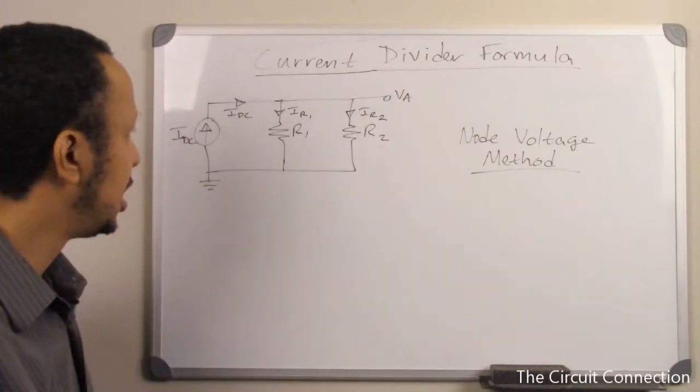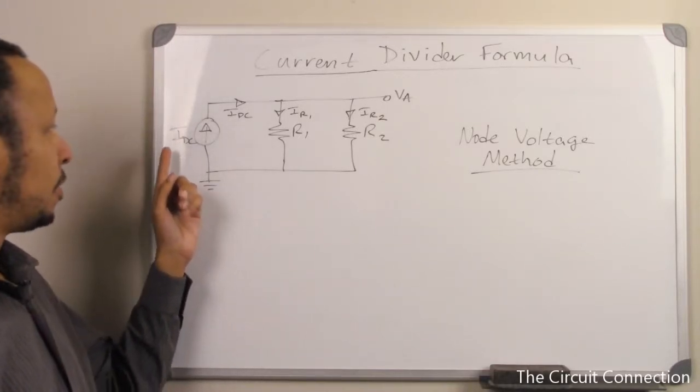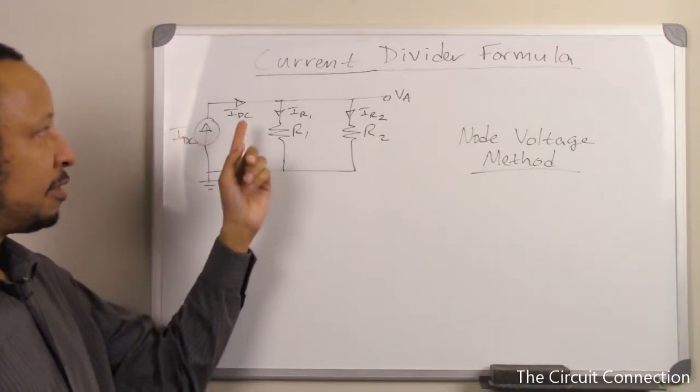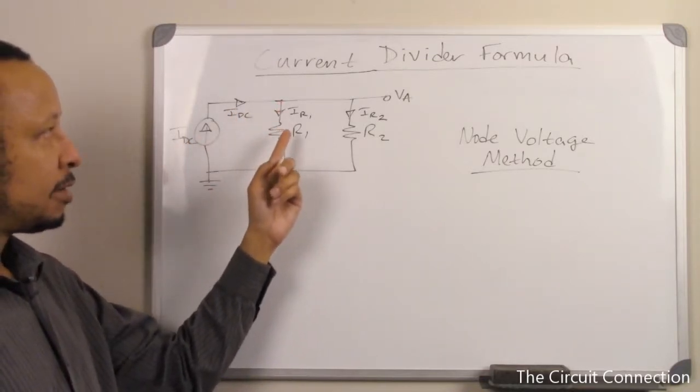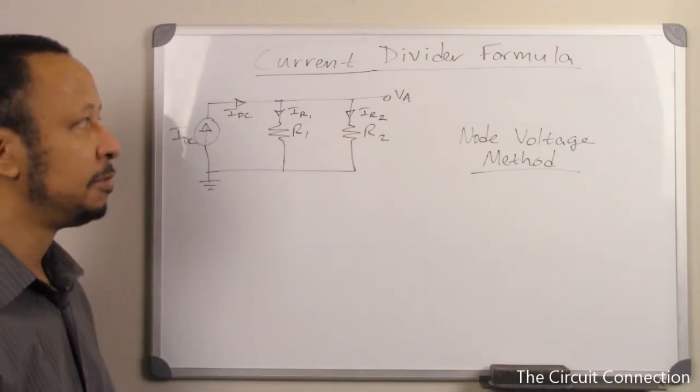To begin with, you have a direct current source here. I've named that IDC, and so you have IDC feeding IR1 and IR2 for resistors R1 and R2, respectively.